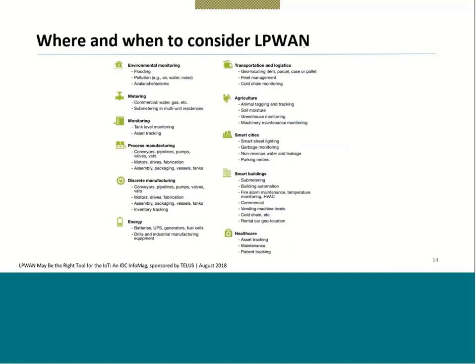This is a very important slide: where and when to consider LPWAN. As an IoT engineer or someone working on an IoT project or startup, you need to know when this is the most appropriate technology. Key use cases include: environmental monitoring such as flooding and pollution; commercial metering for water and gas; sub-metering in multi-unit residences; tank level monitoring; and asset tracking.